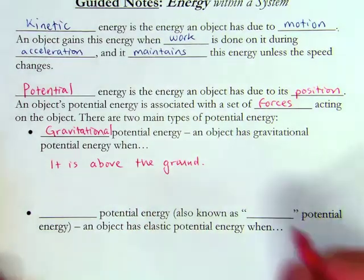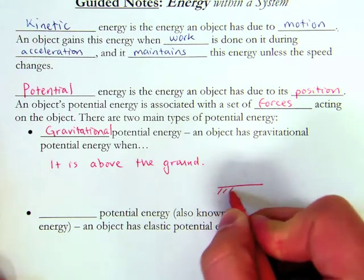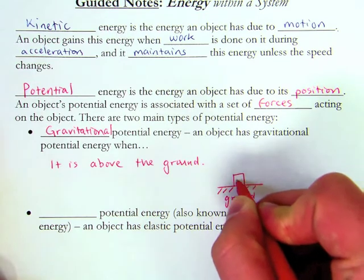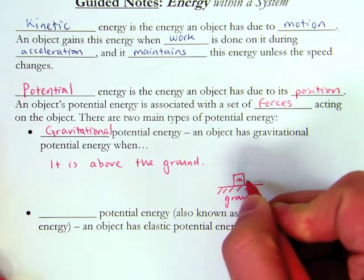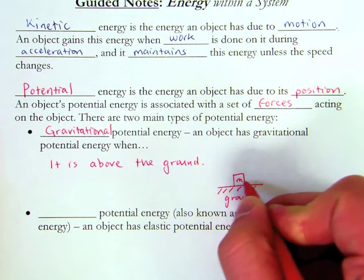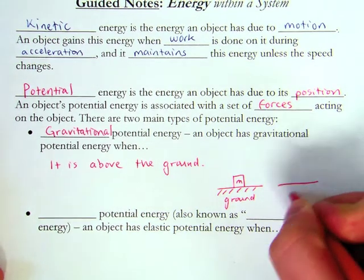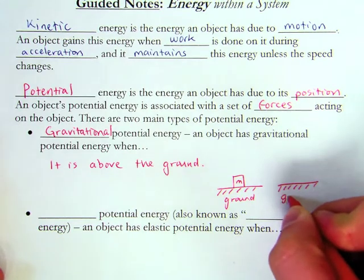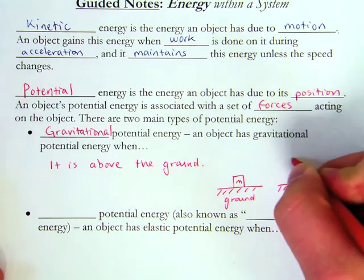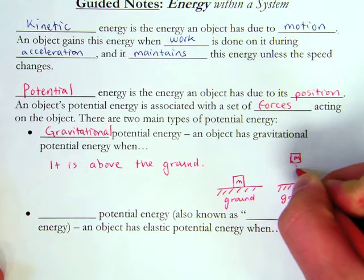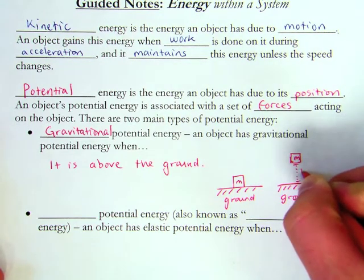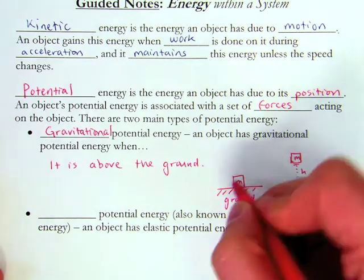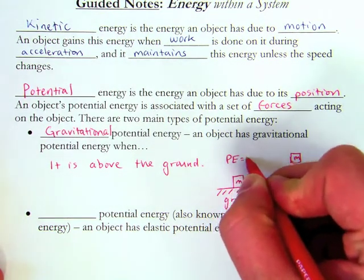Now, for example, an object, if this is the ground, an object of mass m doesn't have any potential energy if it's resting on the ground. But right here, if this is the ground, and a mass is up above the ground, a certain height, then that object has potential energy. So in this situation, the potential energy would be zero.